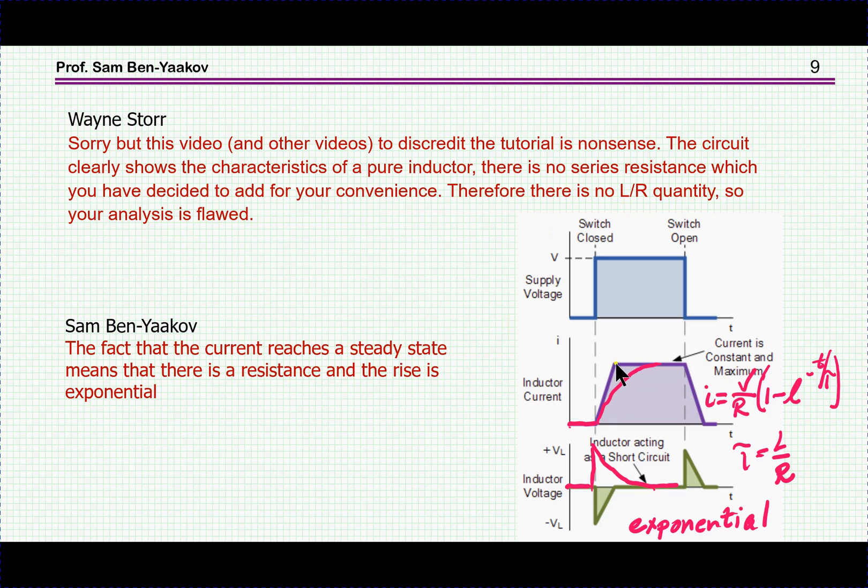Well, the fact that the current comes to a certain value and stops at this value implies that there is a resistance. You can't escape from it. Without a resistance, the current will be going up and up and up with no end. So if it comes to a certain value, then obviously you do have a resistor. And if you have a resistor, then the rise is exponential.